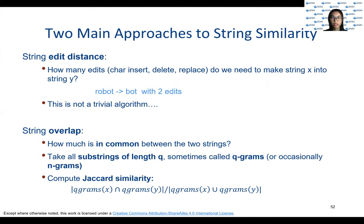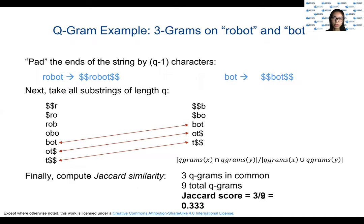This is done using Jaccard similarity. We use a dollar sign as padding and consider three-grams, so we pad with two dollar characters at each end. First, take a string and turn it into a set of substrings of length q. Second, compare the sets for similarity using the distance measure called Jaccard — it is a measure of the distance between sets. For example, the size of the intersection over the cardinality of the union.